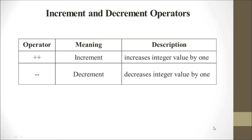Increment and decrement operators. The plus-plus (++) sign indicates increment — it increases an integer value by 1. The minus-minus (--) operator is the decrement — it decreases an integer value by 1. These two operators are generally used in for loops.